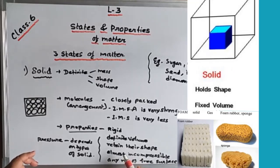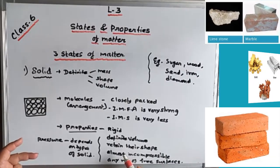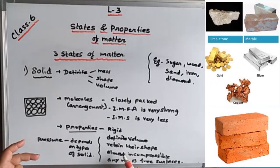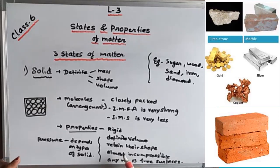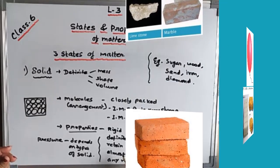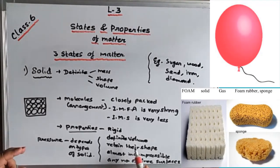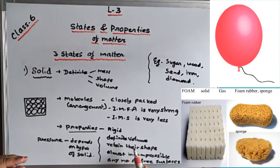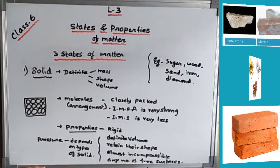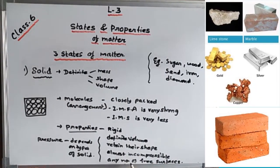Hard solids like gold, iron, diamond, and wood are incompressible. But soft solids like rubber bands, balloons, and sand are slightly compressible. Most solids are incompressible.